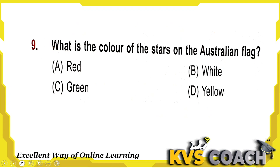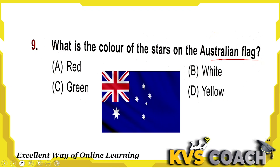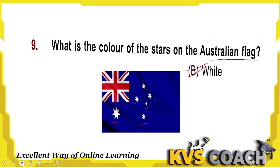Next: what is the color of the stars on the Australian flag? Looking at the Australian flag, you can see there are white color stars. So option B, white color, is the right answer.